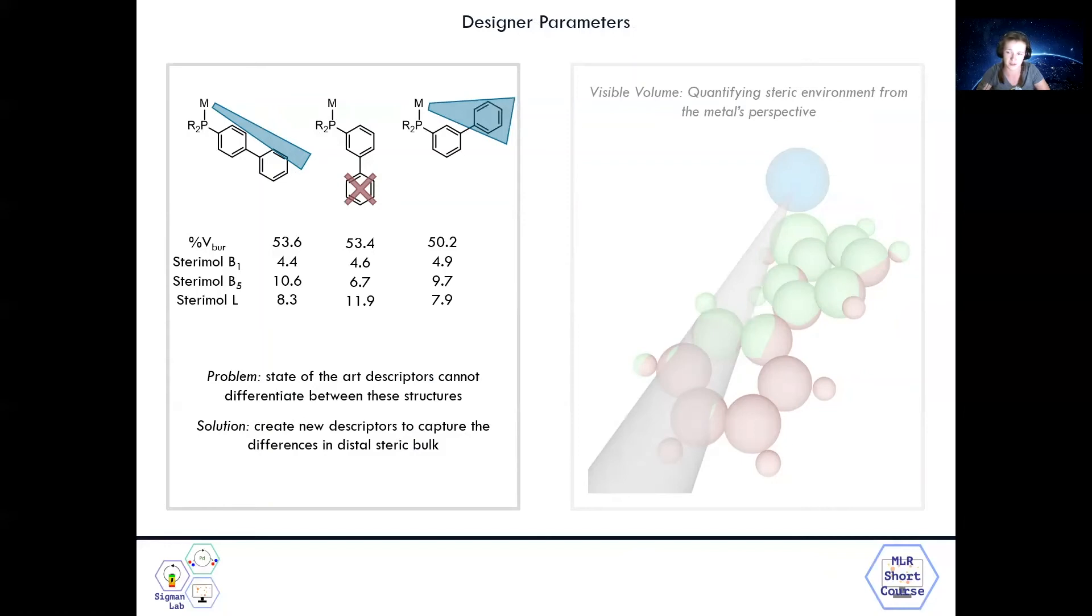However, the steric descriptors I just showed you weren't able to differentiate between these structures. The solution to this problem was to design a new parameter that could capture these structural differences. We developed a parameter called visible volume as a way to approach this problem. While I won't take the time to go through the mechanics of how this parameter is obtained, the parameter quantifies the volume of the phosphine ligand that is visible to the metal center. So this image maps out where the ligand is visible to the blue metal sphere, where green is visible and red is not. This cone shows how these three atoms are partially hidden from visibility by this highlighted atom's shadow.